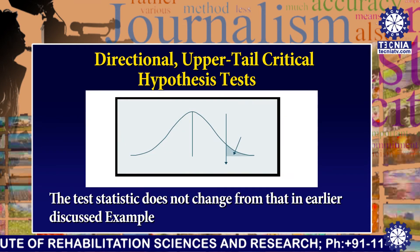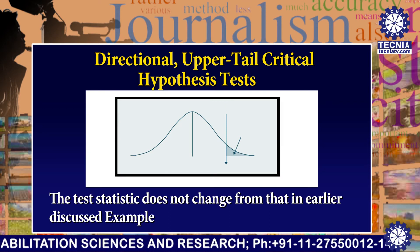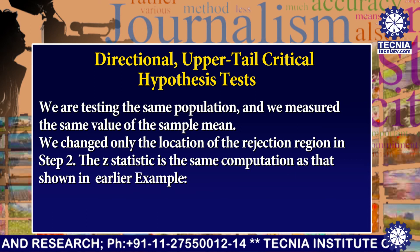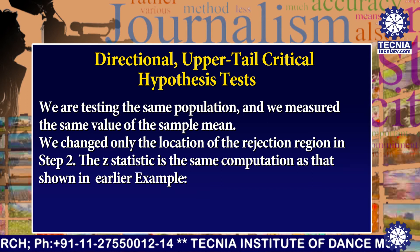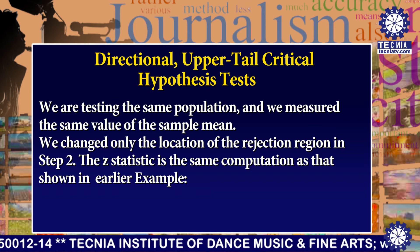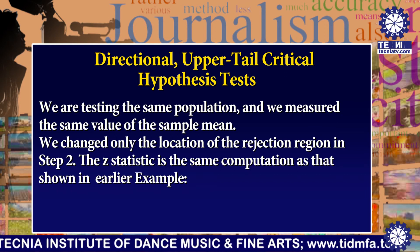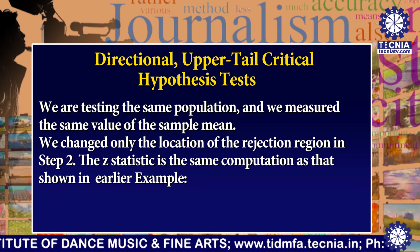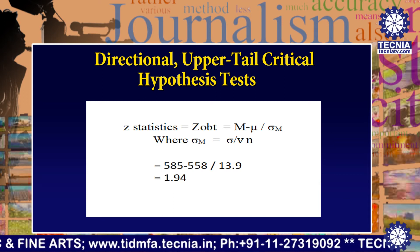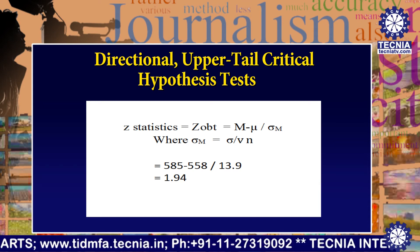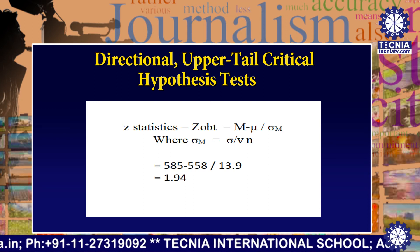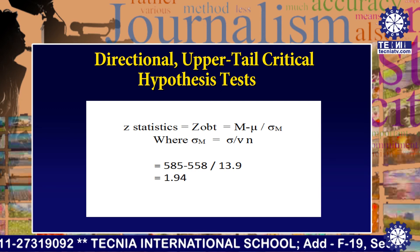In this figure the test statistic does not change from the earlier discussed example. We are testing the same population and we measure the same value of the sample mean. We change only the location of the rejection region in Step 2. The Z statistic equals M minus mu divided by sigma M, where sigma M equals sigma divided by the square root of N: (585 minus 558) divided by 13.9, which equals 1.94.